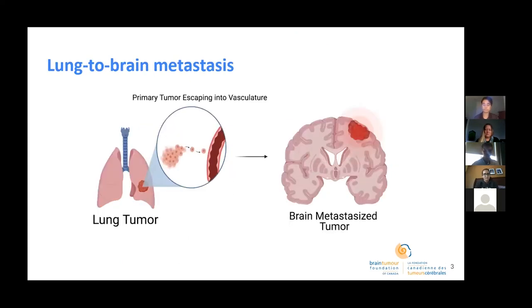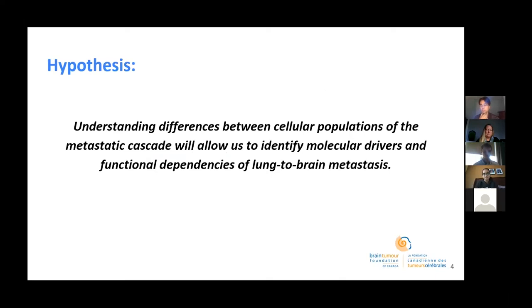Lung-to-brain metastases is when cells from the lung tumor spread to the brain to initiate a secondary tumor. This is accomplished through a process called the metastatic cascade, which can cause selection-driven differences in the secondary tumor. Of those cells that are able to metastasize, only a rare fraction can initiate the brain tumor. These cells are said to possess stem-like properties which allow them to resist conventional therapy. By understanding differences between cellular populations of the metastatic cascade, we can identify molecular drivers and functional dependencies of lung-to-brain metastases, and we can then further target these to eliminate disease.